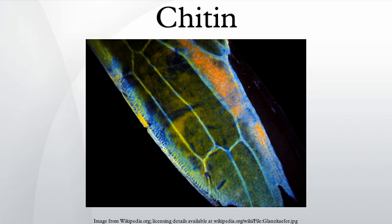The structure of chitin is comparable to the polysaccharide cellulose, forming crystalline nanofibrils or whiskers. In terms of function, it may be compared to the protein keratin. Chitin has also proven useful for several medical and industrial purposes.